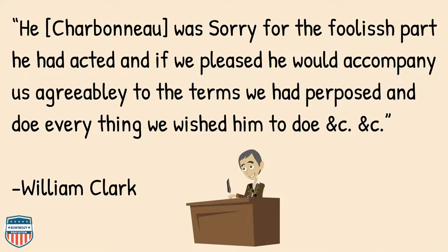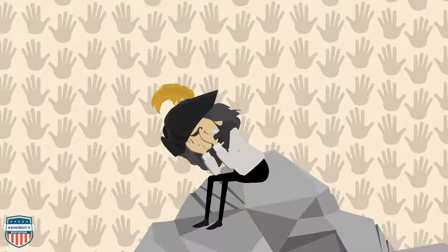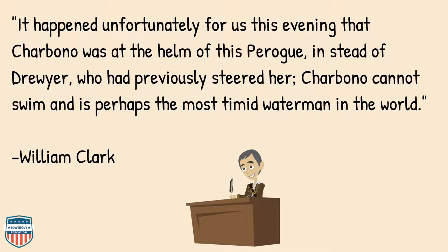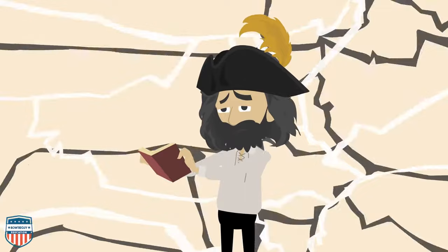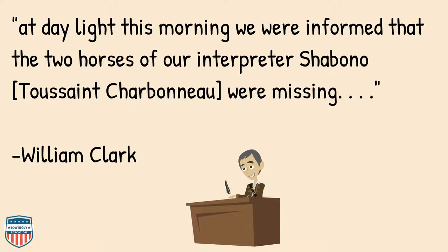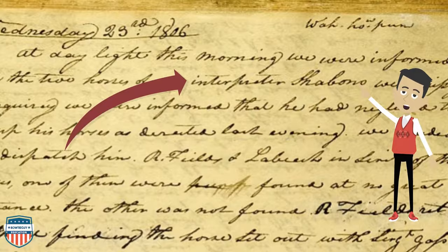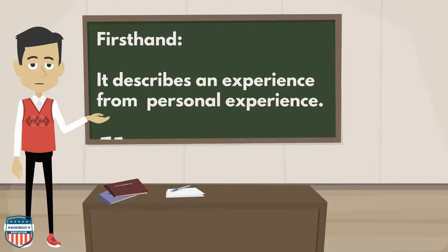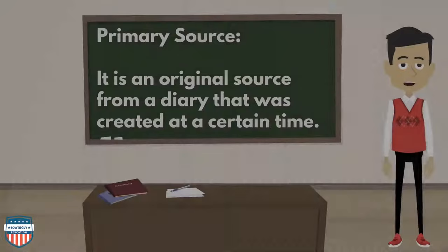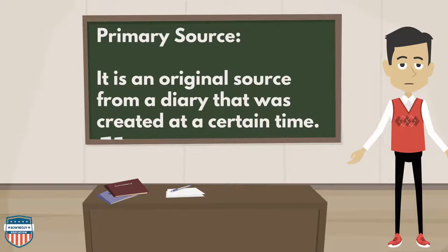Clark also wrote: 'It happened unfortunately for us this evening that Charbonneau was at the helm of this pirogue instead of Drewyer, who had previously steered her. Charbonneau cannot swim and is perhaps the most timid waterman in the world.' And: 'At daylight this morning we were informed that the two horses of our interpreter Charbonneau — Toussaint Charbonneau — were missing.' William Clark's journal is a first-hand account of Toussaint Charbonneau because it describes an experience from his personal experience. It's also a primary source because it is an original source from a diary created at a certain time.